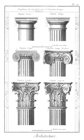Peripteral: a temple or other structure surrounded on all sides by columns forming a continuous portico at the distance of one or two intercolumniations from the walls of the naos or cella. Almost all the Greek temples were peripteral, whether Doric, Ionic, or Corinthian.